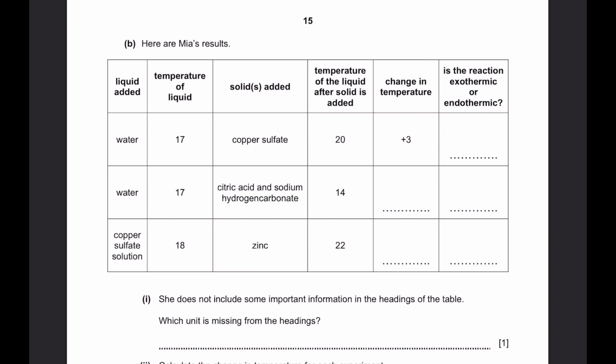Part B. Here are Mia's results. Liquid added water. If water is added, temperature is 17 degrees. The solid added is copper sulfate. Then, temperature of the liquid after solid is added 20 degrees. Change in temperature is plus 3 because 17 plus 3 is equal to 20. Is the reaction exothermic or endothermic? And now, for liquid added water, temperature is 17. Citric acid and sodium hydrogen carbonate added. And then, the temperature of the liquid after solid is added 14 degrees. Now, the copper sulfate solution is the liquid added. Temperature is 18. Zinc solid is added. And temperature is 22 degrees at the end.